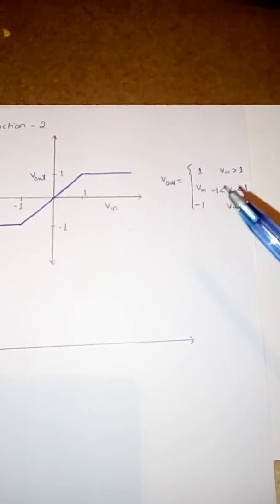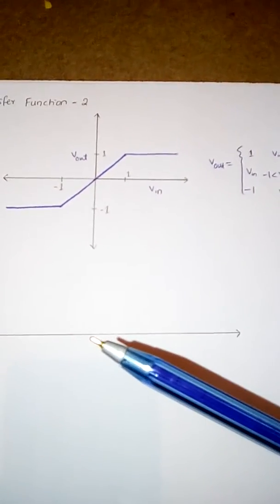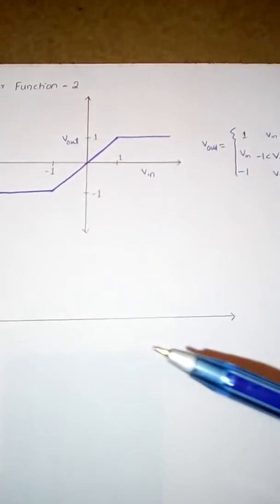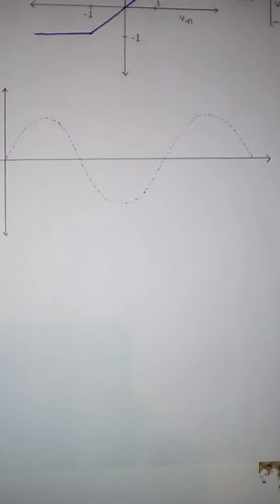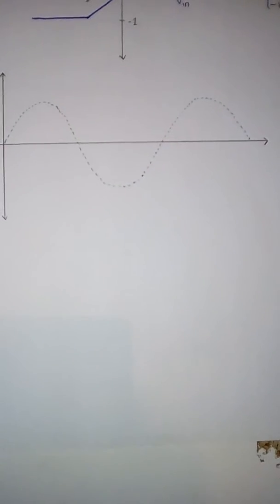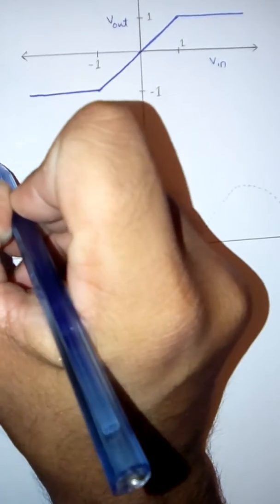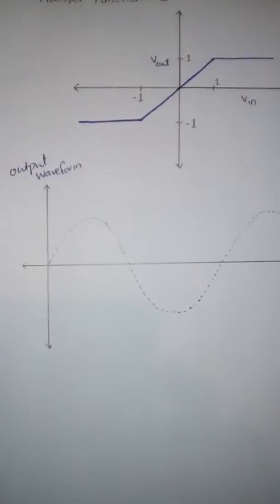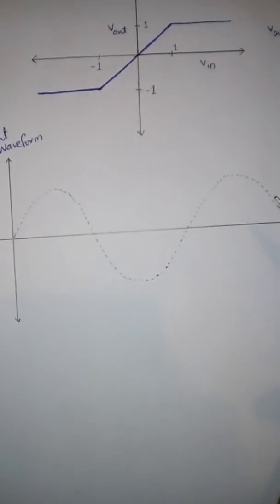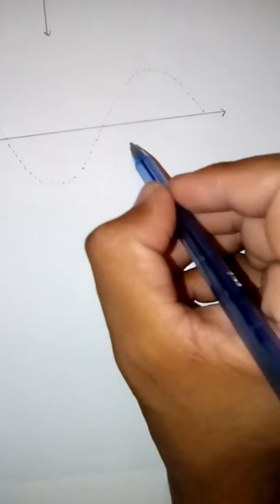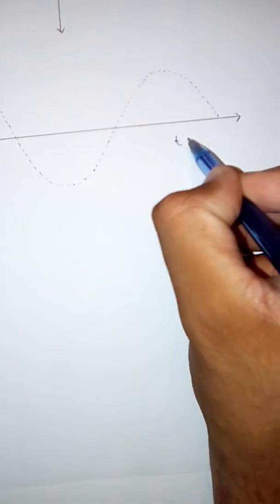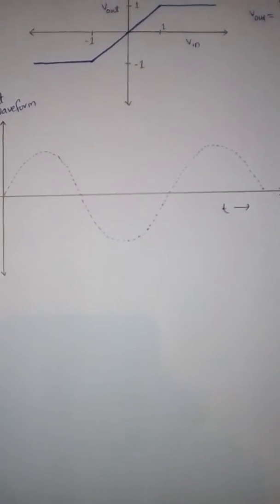Now I'm going to draw the output voltage Vout with respect to time on this graph. I've drawn a sinusoid on the graph — this is my input waveform, which I'm drawing in blue. This is the input waveform as a function of time, so this is my basic input sinusoid.